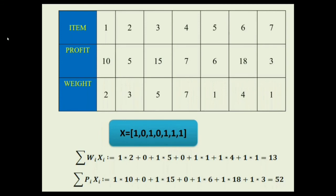Now we calculate the profit, similarly: summation of (item profit × x value). Item 1: 1×10 = 10. Item 2: not placed, 0. Item 3: 1×15 = 15. Item 4: not placed, 0. Item 5: 1×6 = 6. Item 6: 1×18 = 18. Item 7: 1×3 = 3. The total profit is 10 + 15 + 6 + 18 + 3 = 52. That is the final answer.